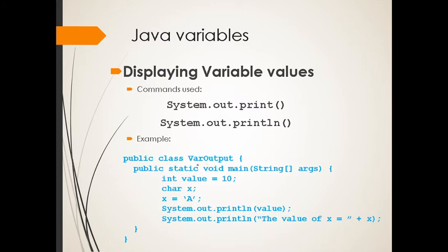If we understand this example, we have VarOutput class name. We have the main as well. We have value 10 to our value literal that uses integer data type. We have char x which has capital letter A as the character. Then system.out.println to print the value. After printing the value, the value of x, which should be A, should be displayed. Let me show you a good example.